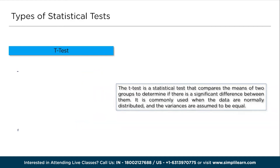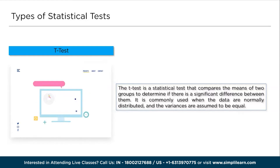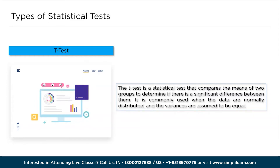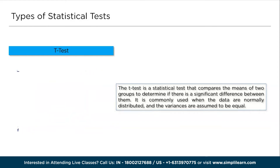It produces a T-value and a corresponding p-value, where a smaller p-value indicates a significant difference. The T-test is valuable for hypothesis testing and assessing whether the observed difference between groups is likely due to chance or represents a real effect.